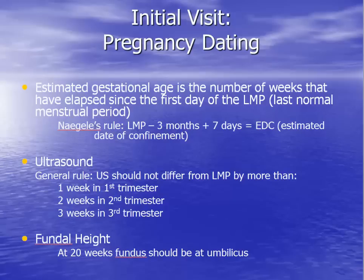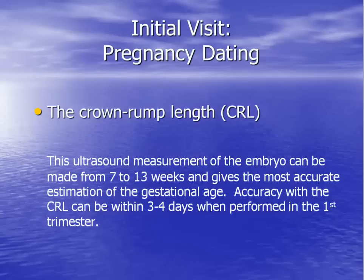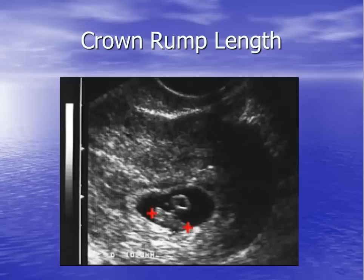Fundal height is a useful measurement after 20 weeks. Ultrasound performed in the first 13 weeks of pregnancy — that is, in the first trimester — is the most accurate way to date a pregnancy. The measurement obtained is called the crown rump length, and it is accurate to within 3 to 4 days. This ultrasound image shows the pregnancy sac with dark fluid in the center of the screen. The red calipers are measuring the crown rump length of the embryo. The ultrasound machine's computer converts the length of the crown rump in millimeters to an estimated gestational age in weeks.